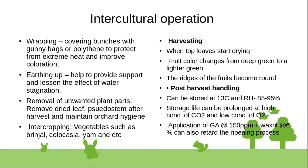Harvesting indicators include: when top leaves start dying, fruit color changes from deep green to lighter green, and the ridges of fruit become round. Post-harvest, banana can be stored at 13 degrees centigrade and 85 to 95 percent relative humidity. Storage life can be prolonged at high concentration of CO2 and low concentration of O2.